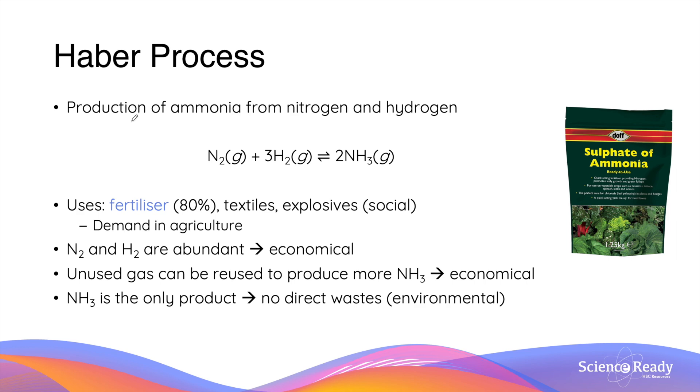Let's apply all the factors we've discussed by using two specific examples of chemical synthesis. The first process is the Haber process which produces ammonia from nitrogen and hydrogen gas as you can see by this chemical equation.